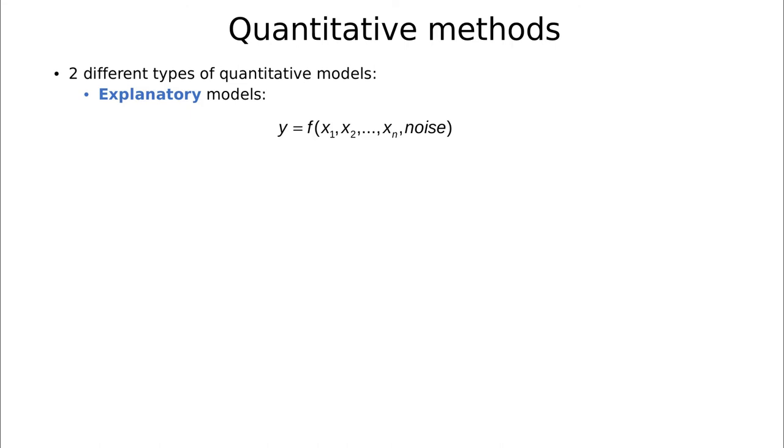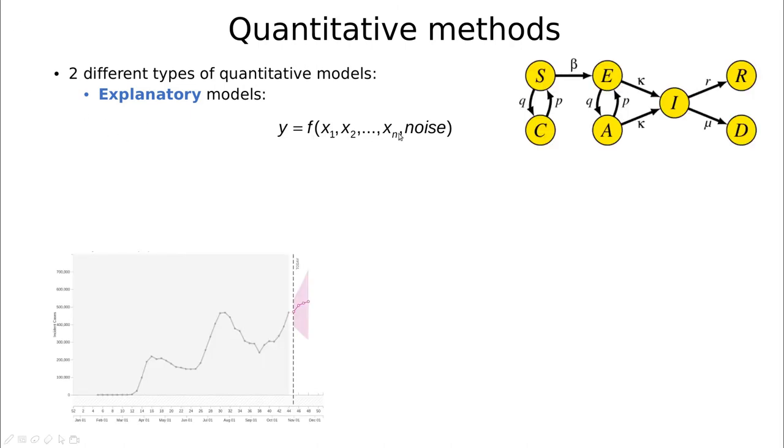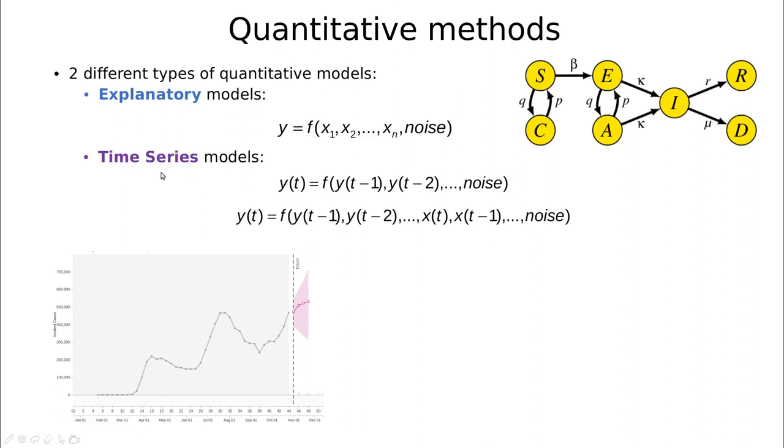But in this course we are going to focus only in quantitative methods. Here again we have a couple of possibilities. We have explanatory models in which case we have some predictors and we're going to predict the output using the predictors. For instance in the case of a pandemic this could be the number of cases which is the time series but also the number of people in the hospital, the number of ICU people in the hospital, maybe the calls to 911 or whatever. And we try to plug all this information and try to extract the value of the number of cases.